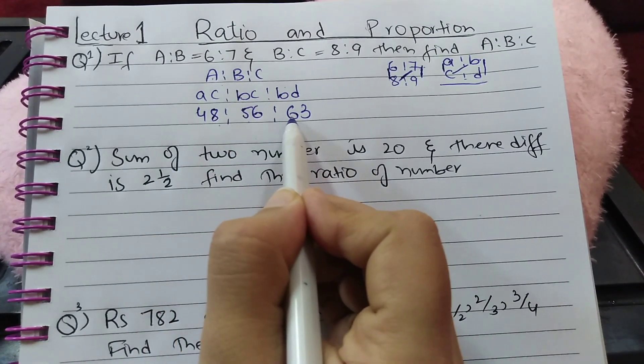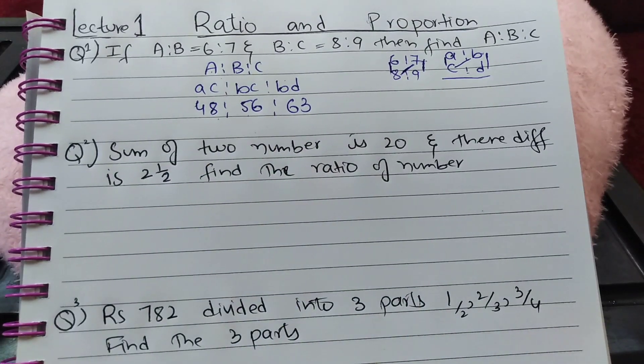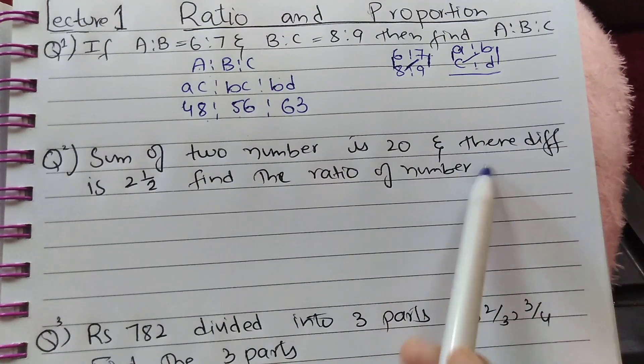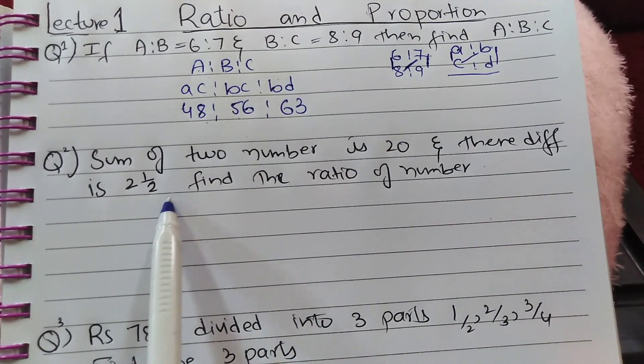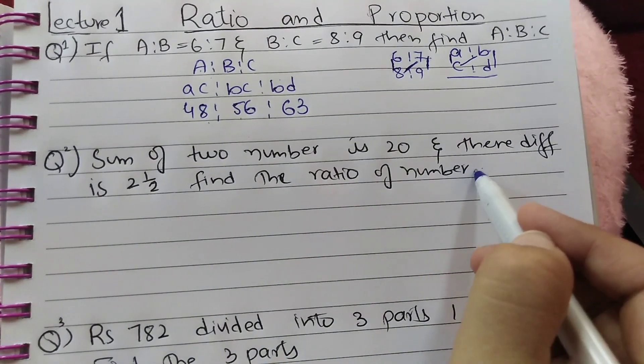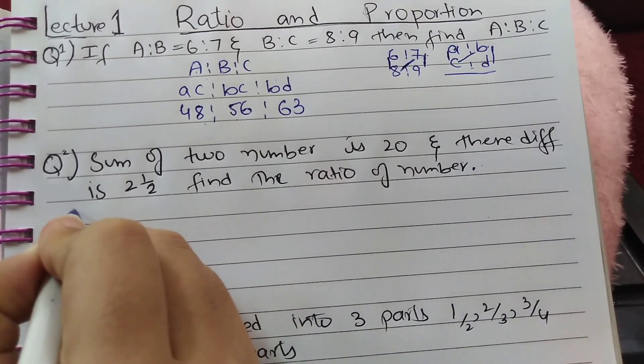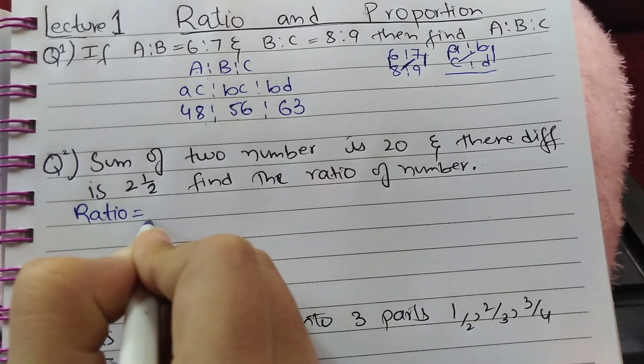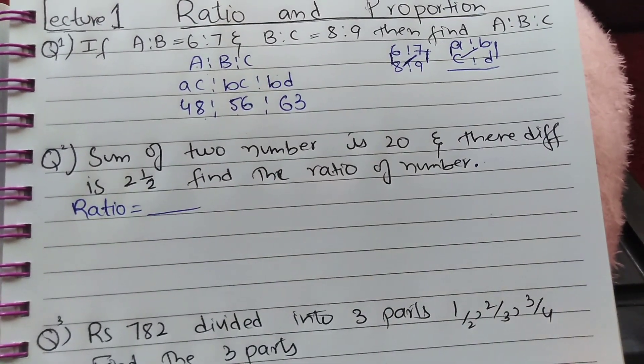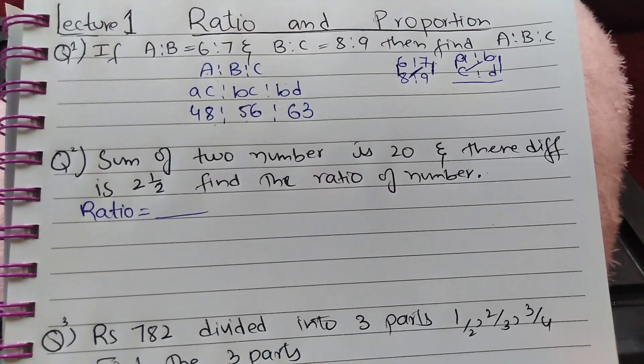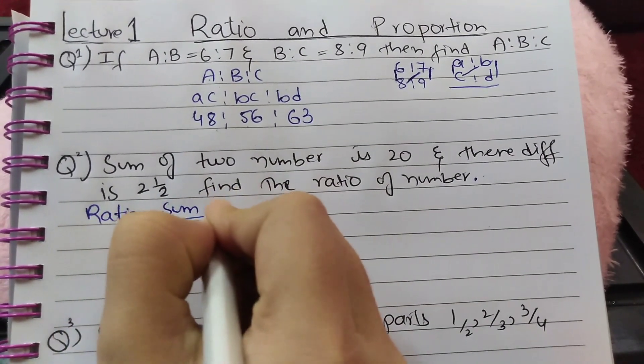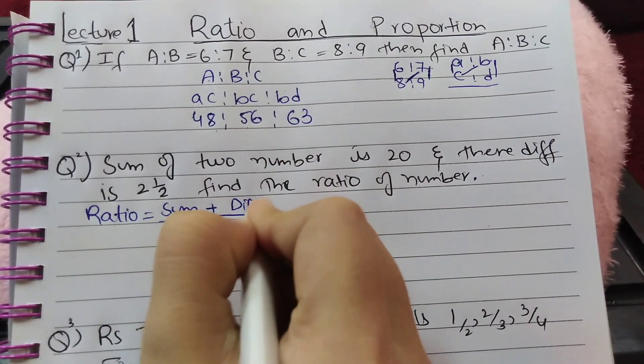Question number 2: Sum of two numbers is 20 and their difference is 2½. Find the ratio of the numbers. The shortcut for these types of questions is: ratio = (sum + difference):(sum - difference).